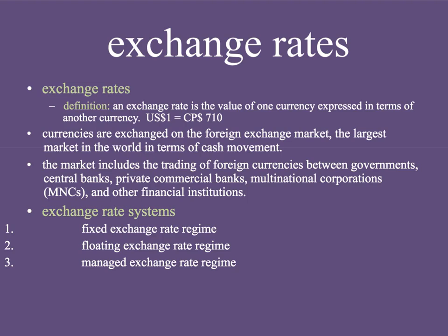So what kinds of exchange rate systems are there? There are three main ones — really just two with a mix. There's a fixed exchange rate system, a floating exchange rate system, and a managed exchange rate regime. We're going to take a look at those, and we will have a thorough understanding of exchange rates at the end of this unit. It's super cool — I hope you enjoy it. I hope this video was helpful. Talk to you in a bit.